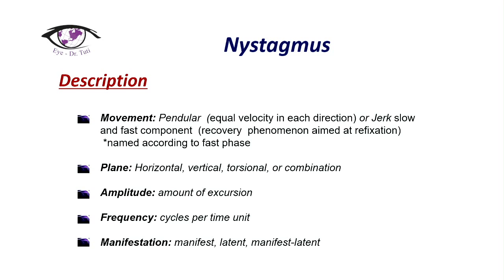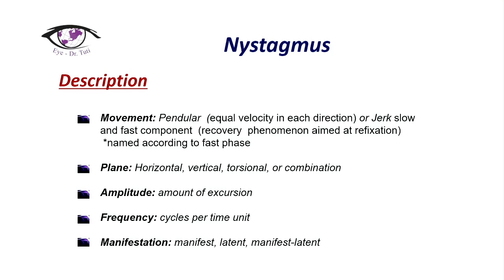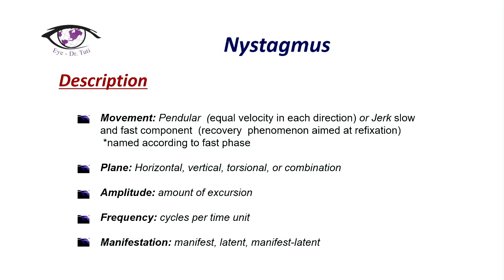When we describe nystagmus — and actually when I was on my residency, every time I had to present a patient with nystagmus I had to give a correct and complete description. We have to describe the movement, which can be pendular or jerk with a slow and fast component, the horizontal and vertical direction, additionally torsional or combined direction, and also the amplitude, frequency, and manifestation. In terms of manifestation, nystagmus can be manifest, latent, or manifest-latent.